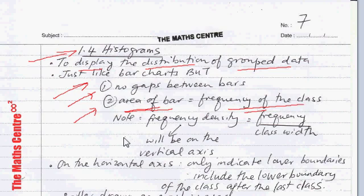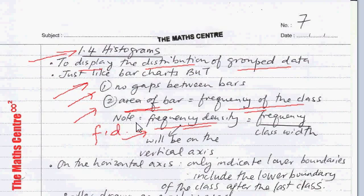Now let's look at a new term: frequency density. I'm going to be using F.D. for frequency density, and that equals the frequency divided by the class width. You need to know this — frequency divided by the respective class width.